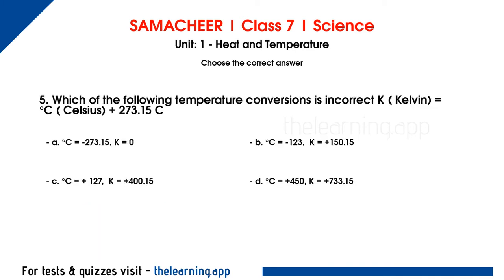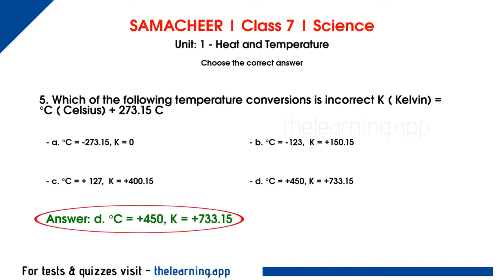Fifth question: which of the following temperature conversion is incorrect? The formula is K equals degree Celsius plus 273.15. We substitute the given values into this formula for each option to check. For option A, Kelvin is 0, degrees Celsius is minus 273.15 plus 273.15, which gives 0 equals 0 — that is the correct option. Option D gives the wrong answer and is the incorrect conversion.